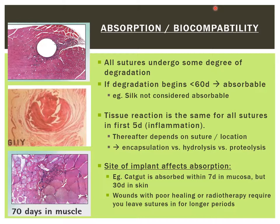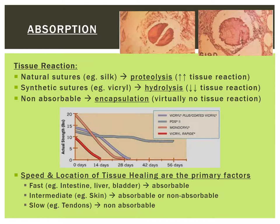This reaction is not only dependent on the suture, but also the tissue around the suture. For example, cat gut is completely absorbed in the gut mucosa within seven days, but when placed on the skin can take up to 30 days to absorb. In terms of tissue reaction, silk sutures undergo proteolysis with lots of tissue reaction. Synthetics undergo hydrolysis, and non-absorbable sutures undergo encapsulation. When selecting a suture, your decision will be based on the tissue healing time of what you are repairing. Fast healing tissue like the intestine can use an absorbable suture, while slow healing tissues like tendons or muscles require non-absorbable sutures.